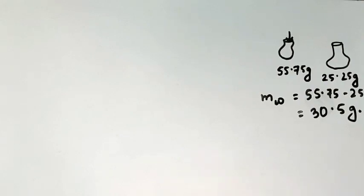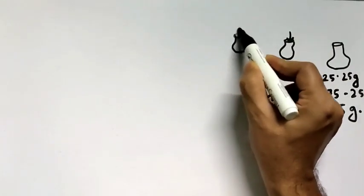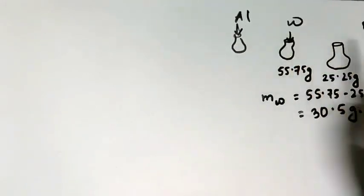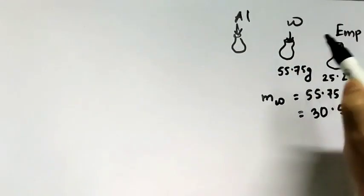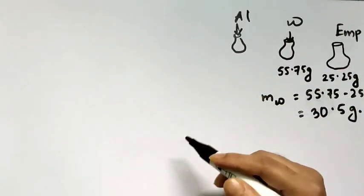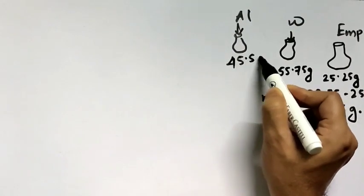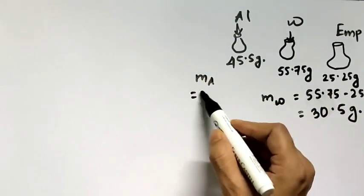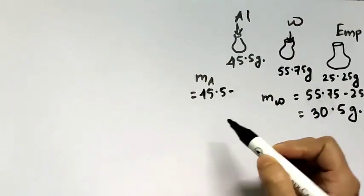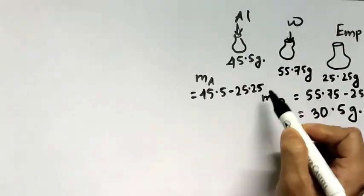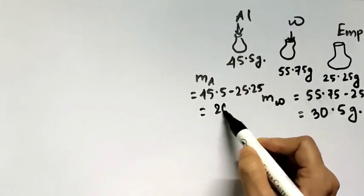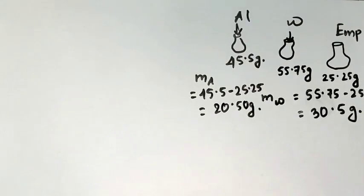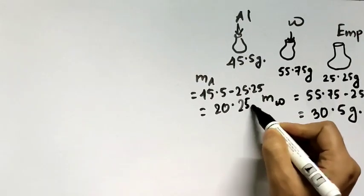When it is filled with alcohol, the total mass becomes 45.5 grams. So the mass of alcohol equals 45.5 minus the mass of the empty bottle, which is 25.25, giving us 20.25 grams.